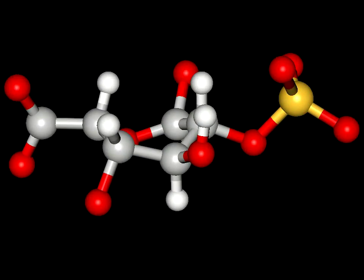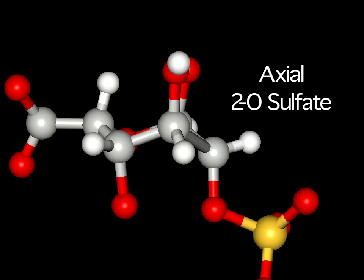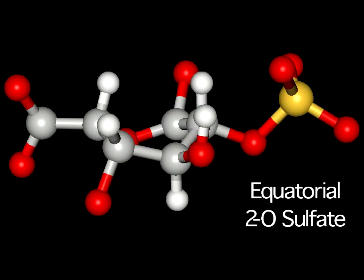Of key importance is the location of the 2-O sulfate groups. In the previous case, this residue was located axially, while in this case, it is in the more energetically favorable equatorial position, straight out to the right.